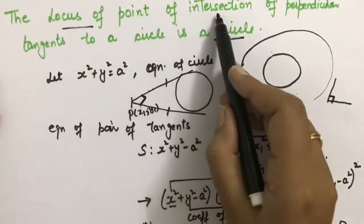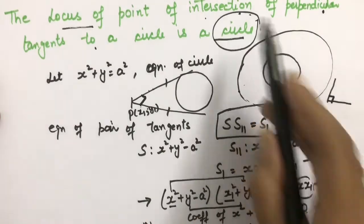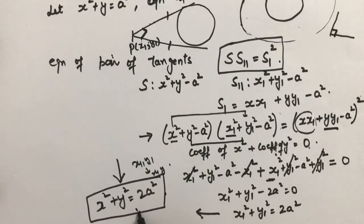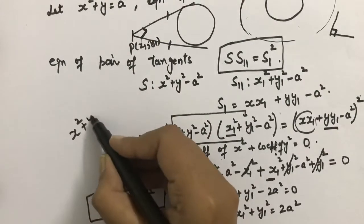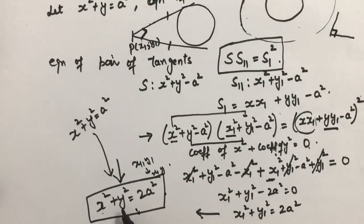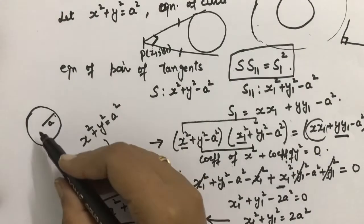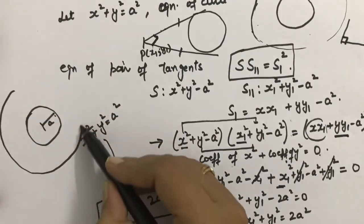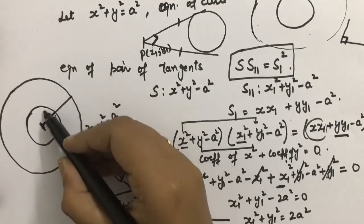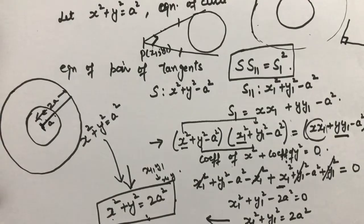This is the required equation. This is also a circle, and this circle is what we call the director circle. So the equation of the director circle is x² + y² = 2a². If the given circle has equation x² + y² = a² with center (0,0) and radius a, then its director circle has the same center (0,0) but radius √2·a. So the director circle equation is x² + y² = 2a².